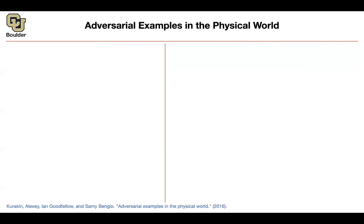Someone might say: okay, you came up with adversarial examples, but they are in the digital world — you show me some digital images, you perturb them, and yes, my neural network classified it wrong. But in the physical world, our robots, self-driving cars, or smart cities are going to see the world through cameras. Does your adversarial example survive those sorts of transformations that you see in the real physical world?